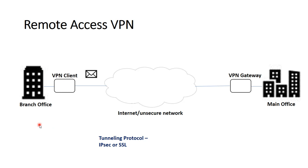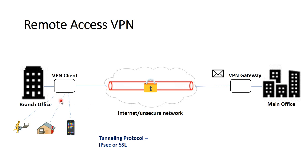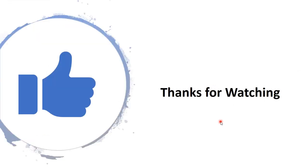In remote access VPN, the user can connect to the corporate network with the help of a VPN client. The VPN client can be installed and used on a laptop, tablet, or smartphone. A remote access VPN is a connection from your VPN client — that is, from a computer or smartphone — to a network. The user just needs to enter their username and password to get connected to the corporate network.